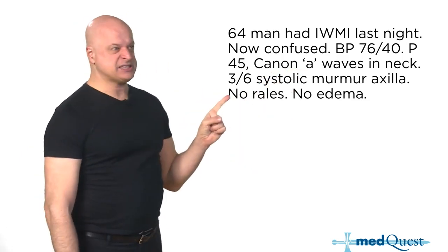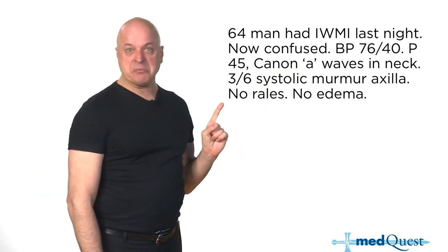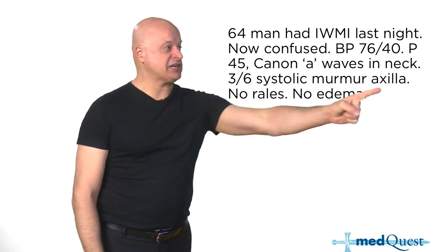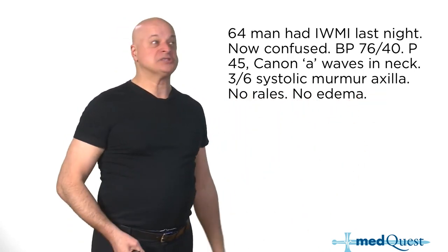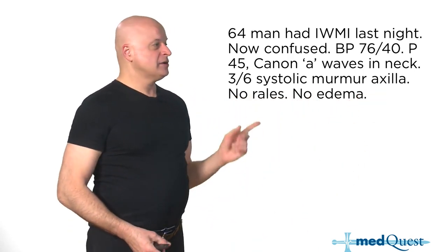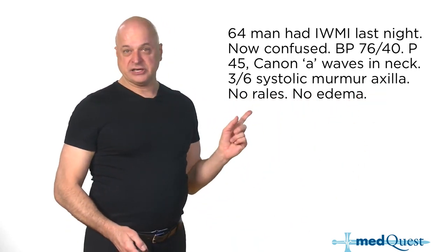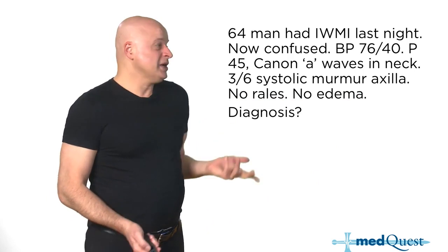There's a 3 over 6 systolic murmur radiating to the axilla — that's bad. But the lungs are clear. So what is it?